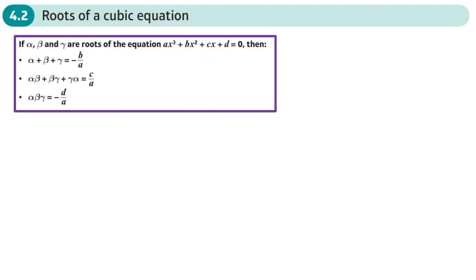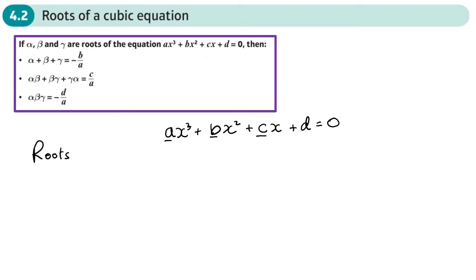This is the second section of the roots of polynomials, and here we're going to look at the roots of a cubic equation. We've already looked at the roots of a quadratic. We have similar rules for the roots of a cubic. A cubic is going to be of the form ax cubed plus bx squared plus cx plus d equals zero, and the roots are going to be alpha, beta, and gamma.